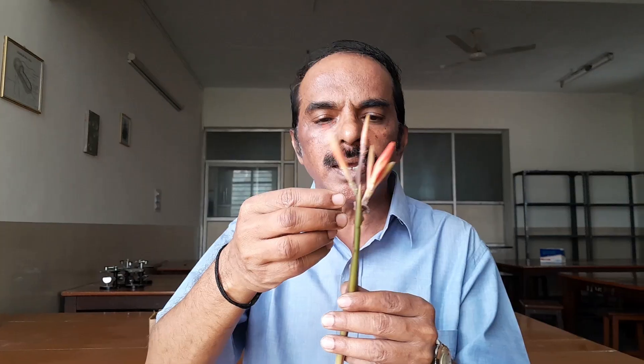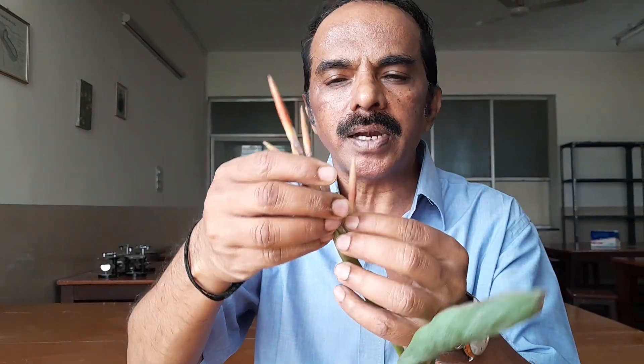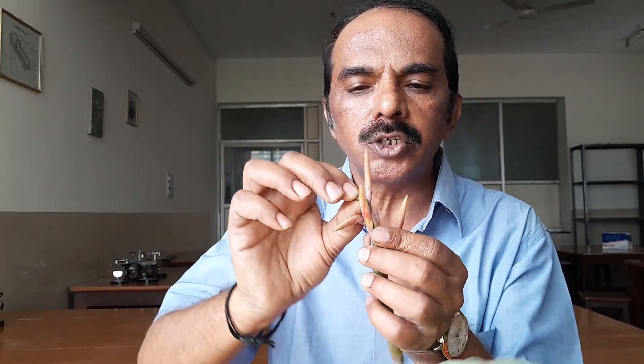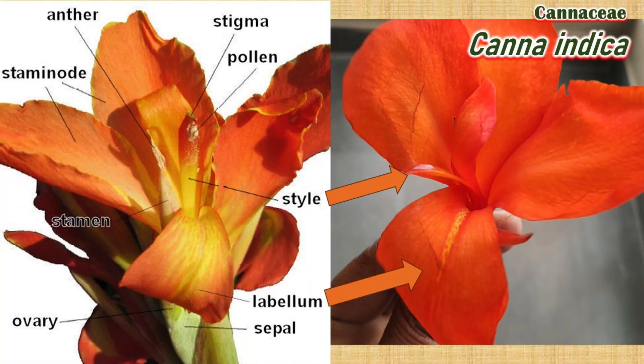This is the racemose inflorescence which actually makes a spike. These are the individual flowers — you can see young buds and this is an open flower. I will open the bud and show you the different parts. The ovary is inferior; you can see the ovary at the bottom.